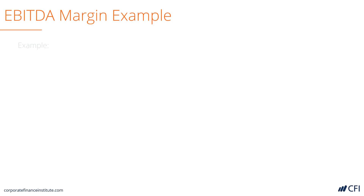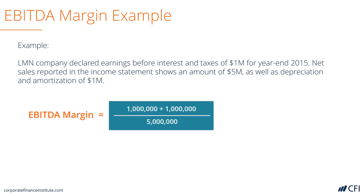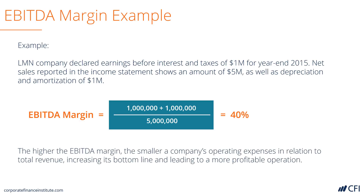Here's an example. A company has earnings before interest and taxes of $1 million. The revenue on the income statement was $5 million and depreciation was $1 million. The solution is $1 million of EBIT plus $1 million of D&A divided by $5 million of revenue, giving an EBITDA margin of 40%. All else being equal, the higher the EBITDA margin, the better.